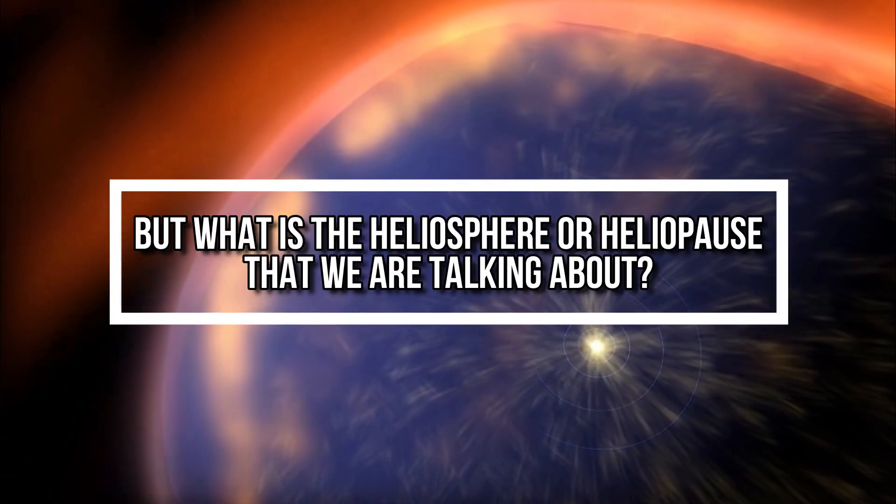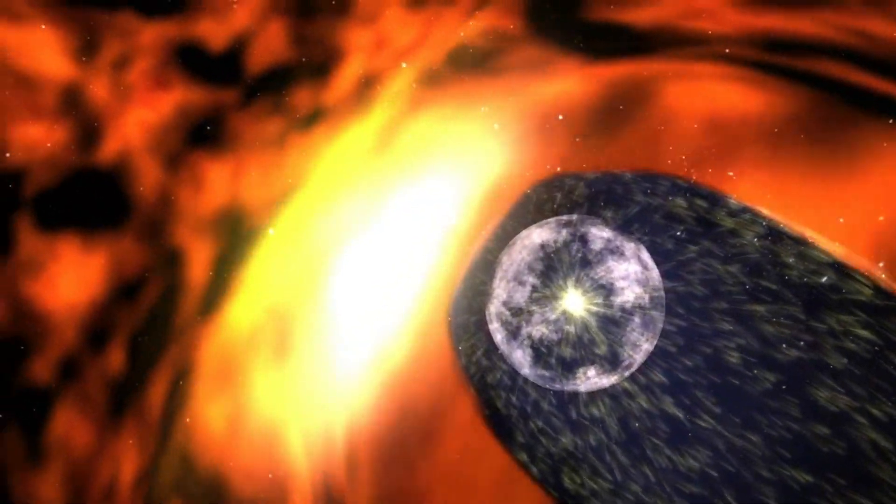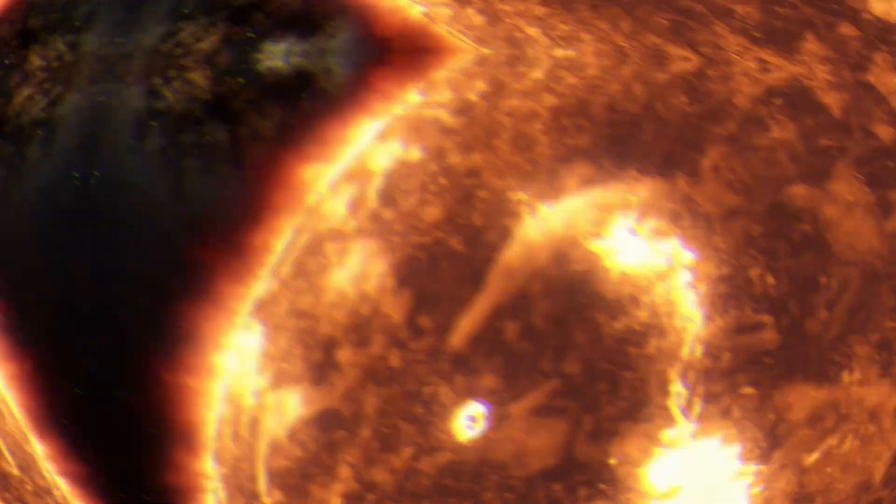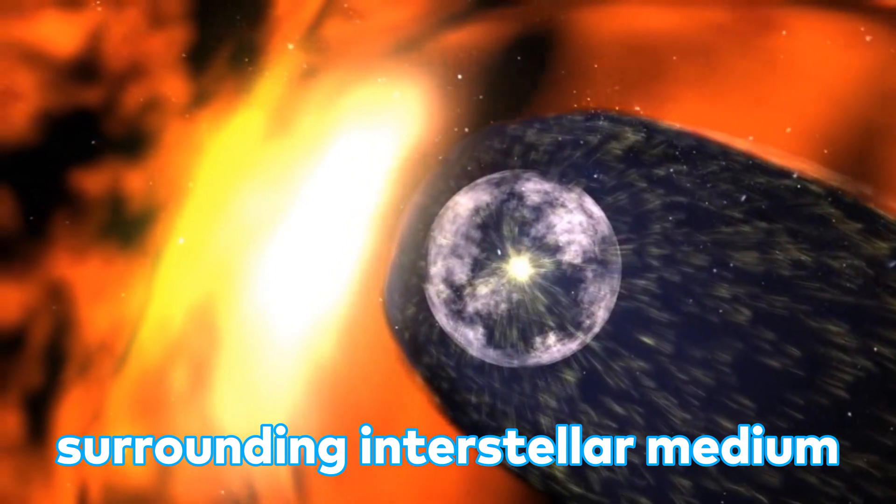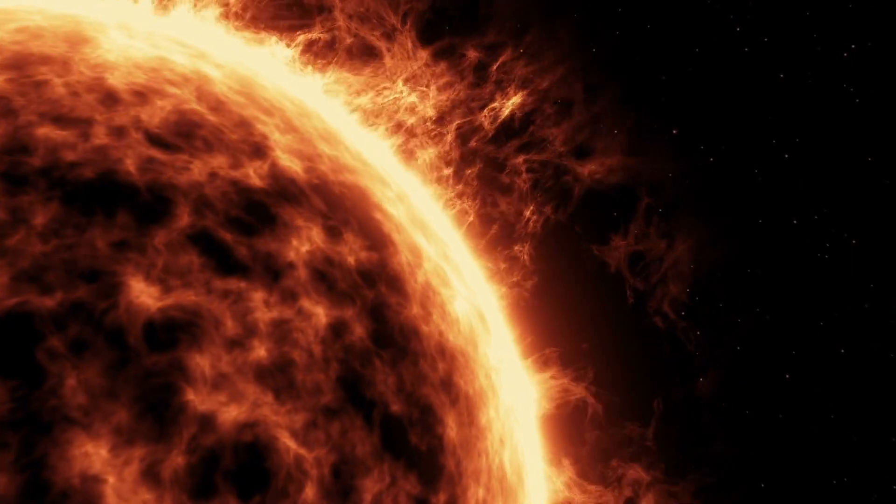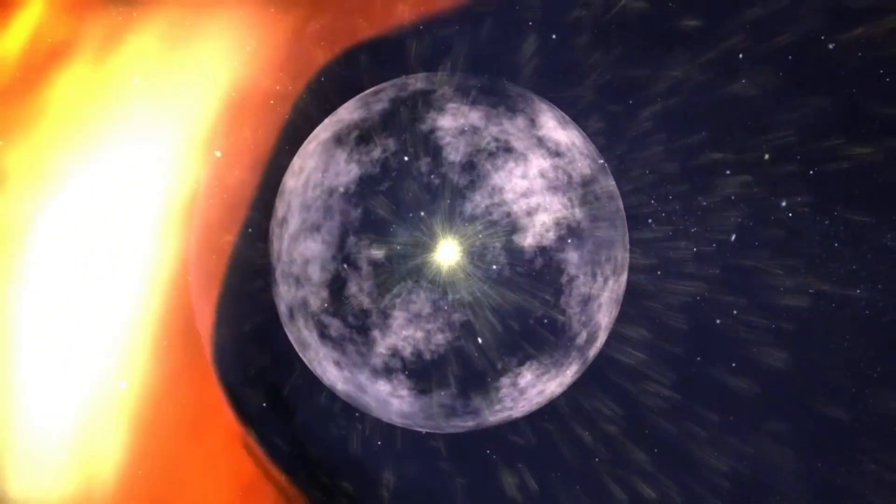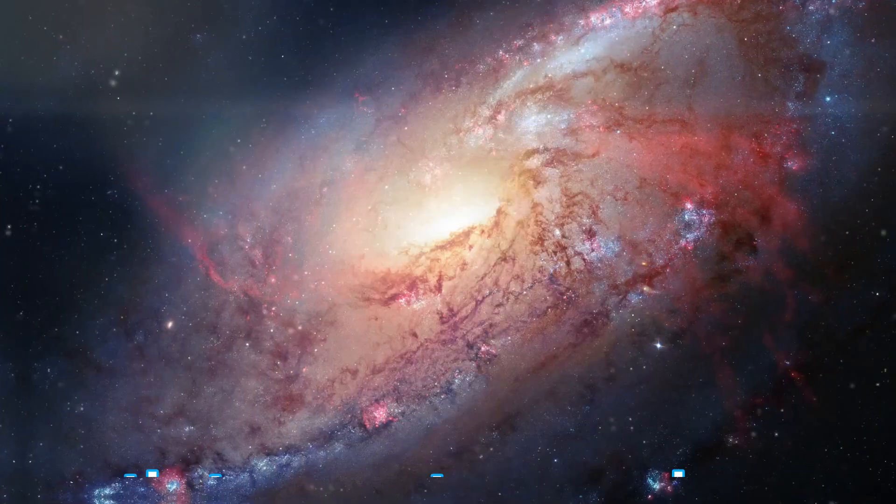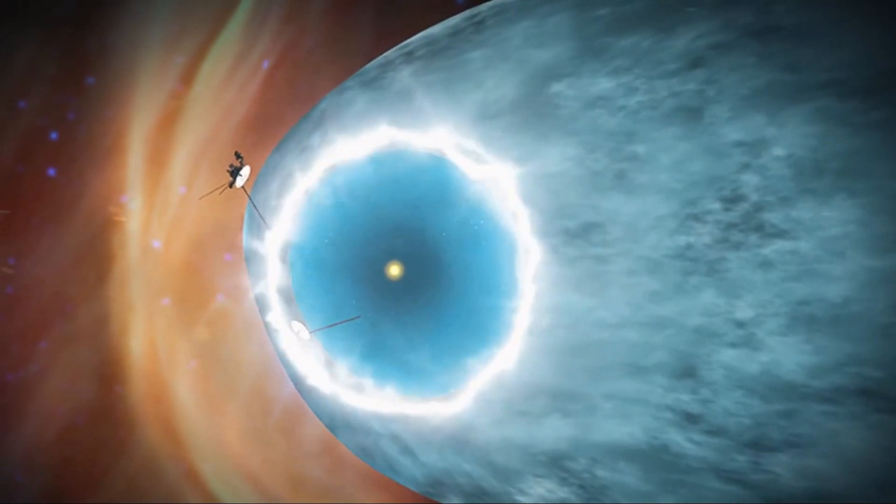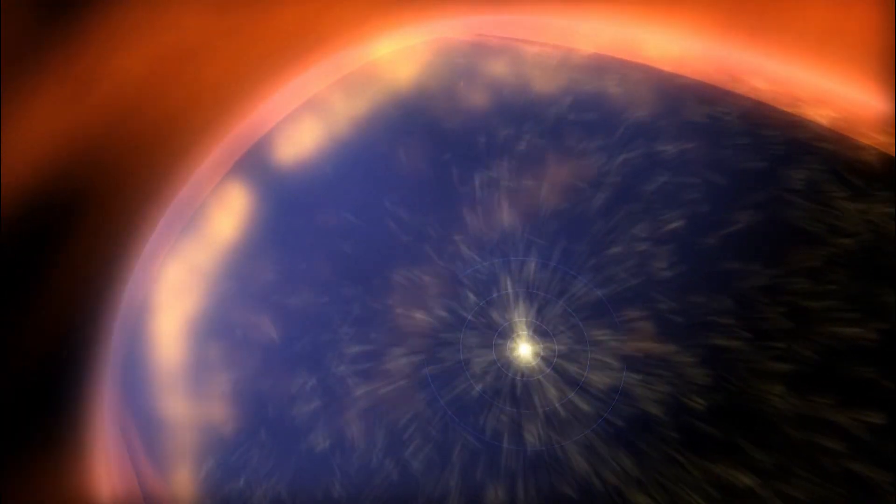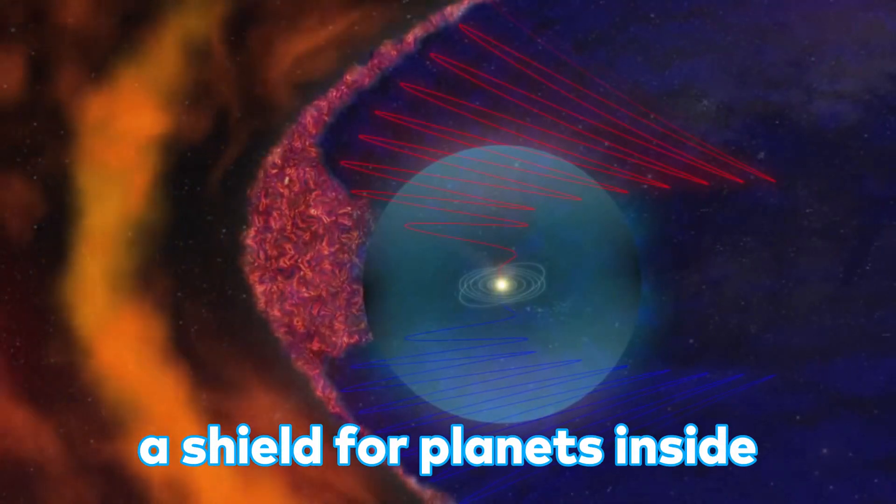But what is the heliosphere or the heliopause that we're talking about? If you don't know, the heliosphere is a bubble-like region of space surrounding and created by the sun, and it is formed, in the plasma physics sense, as a cavity in the surrounding interstellar medium. This cavity is constantly inflated by the solar wind, which is plasma originating from the sun. Beyond the heliosphere, the solar plasma gives way to the interstellar plasma that permeates our galaxy. There are several differences in radiation levels between inside and outside the heliosphere, with cosmic rays becoming less abundant within the heliosphere, providing a shield for the planets inside, including Earth.